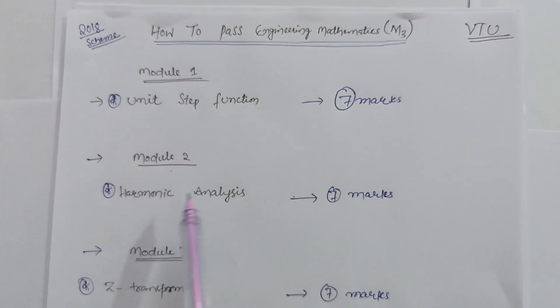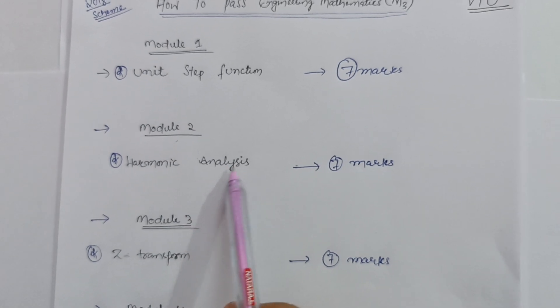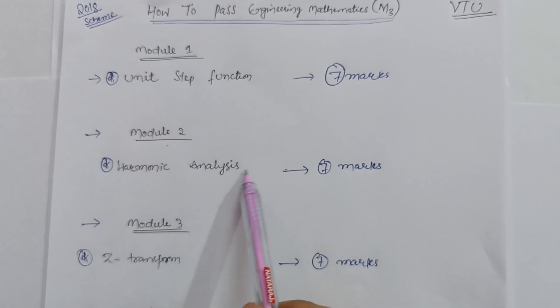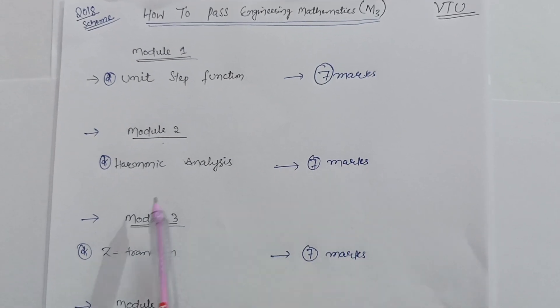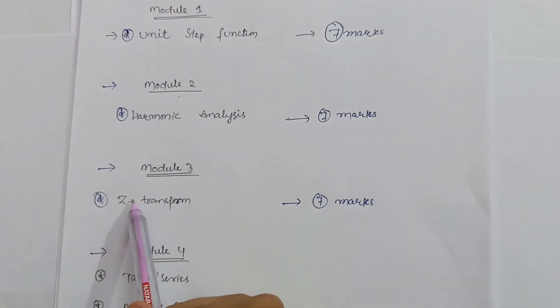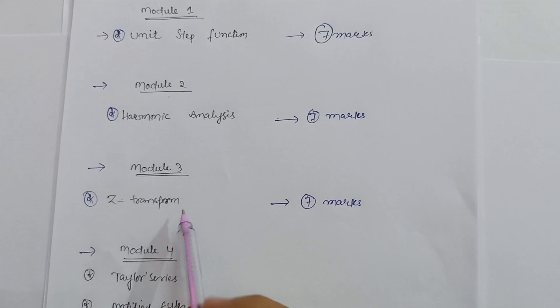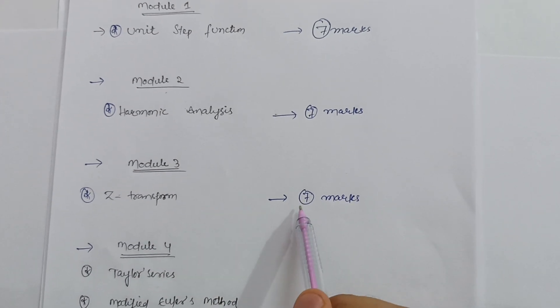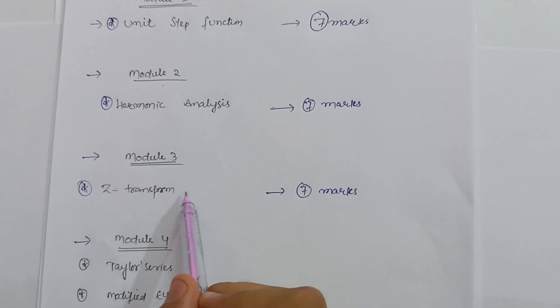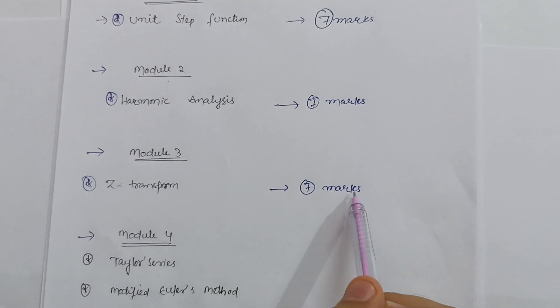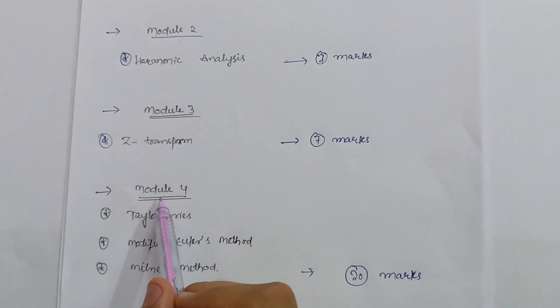Module two, harmonic analysis, is also the simplest question which is asked in the VTU examination. It also carries 7 marks. Then in module third, the Z-transform topic is there. You just go through it, definitely they will ask one question from this particular topic. It also carries 7 marks over here.